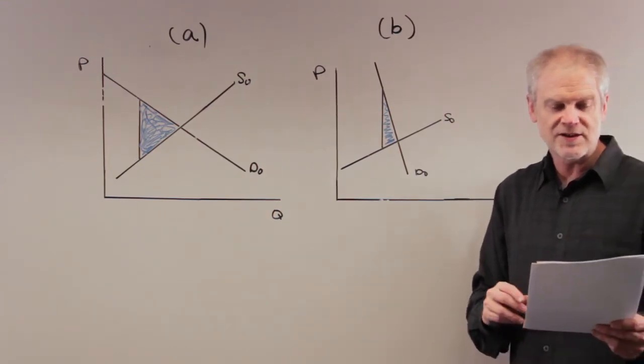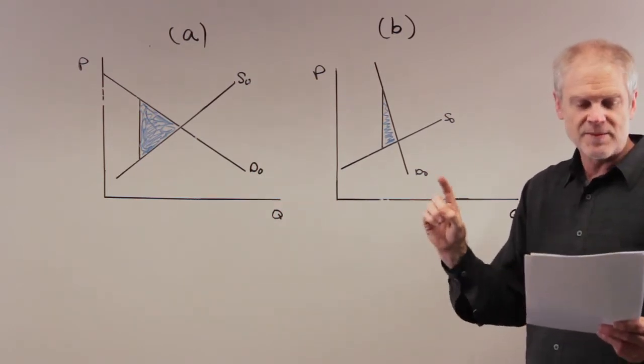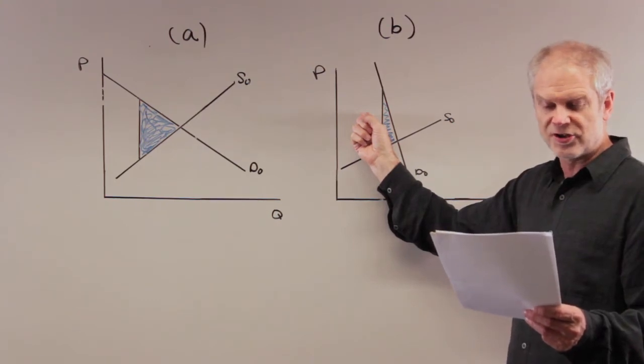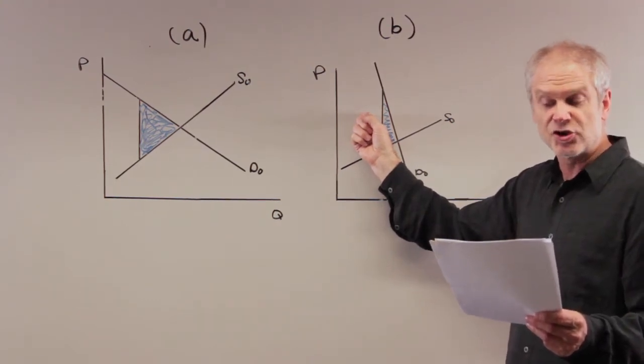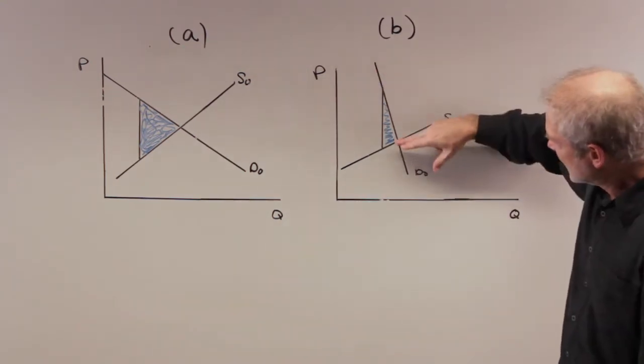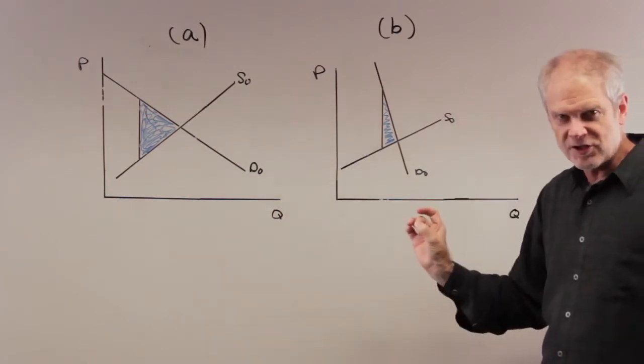So your answer is A - when demand is relatively inelastic, right here, the deadweight loss of a tax is smaller than when demand is relatively elastic. So here it is, the deadweight loss is the blue, relatively inelastic, relatively small deadweight loss.